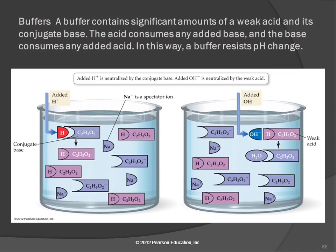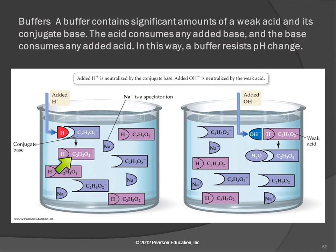You also have to have significant amounts of both. You can't just take acetic acid, put it in water, and say it dissociated a little bit so there's a little bit of acetate — that's not going to act as a buffer. You have to also add sodium acetate, generally in roughly equal amounts. In the illustration, the purple molecules are the acetic acid and the blue are the sodium and acetate. If we add hydrogen ion to this solution, that hydrogen ion reacts with the conjugate base and forms more of the weak acid.